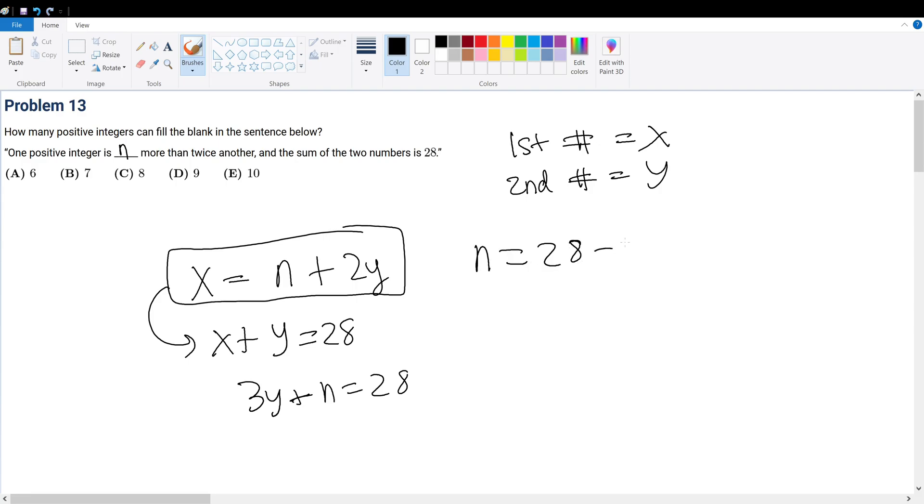We're trying to solve for n, so n = 28 - 3y. Now this must be greater than zero because you cannot be zero more—that wouldn't make sense. At the same time, this cannot be negative because if it's negative, then it doesn't make sense to say it's n more; that would be like n less.